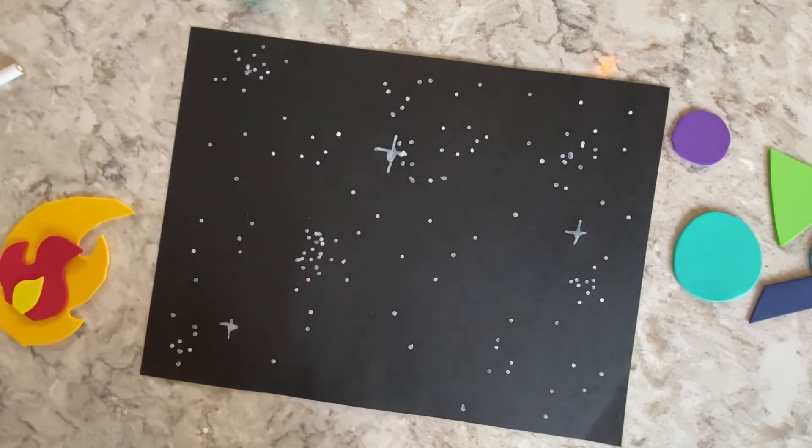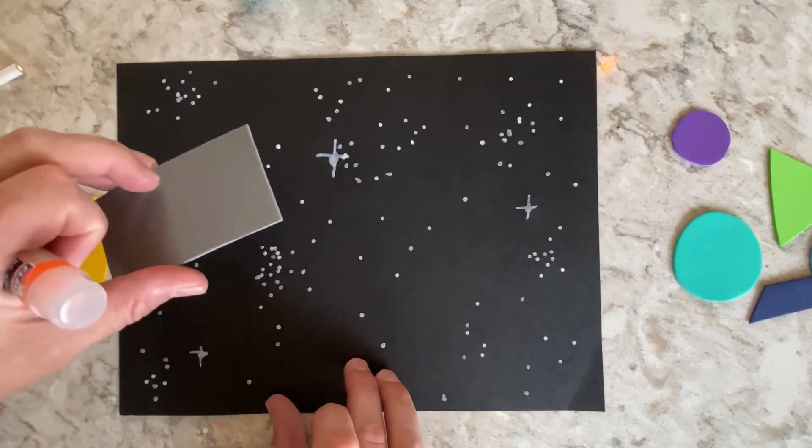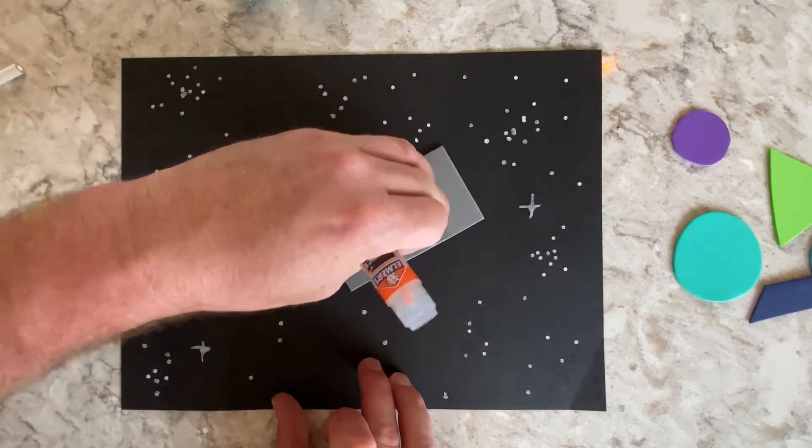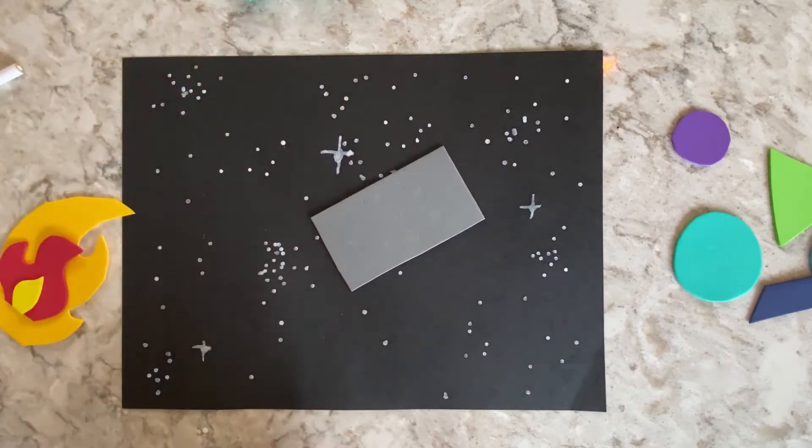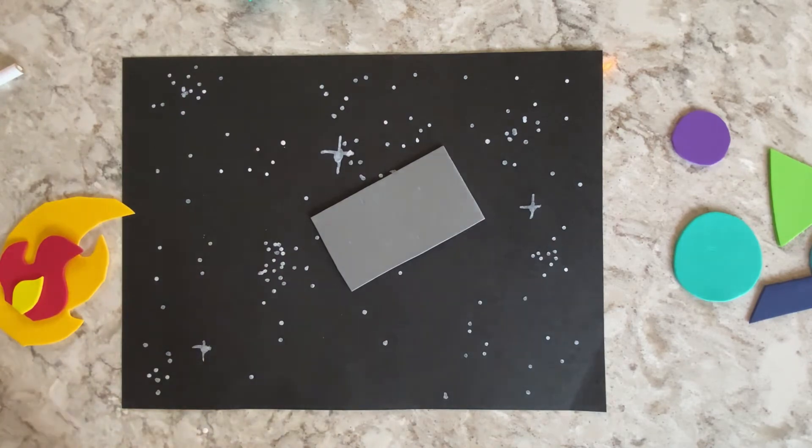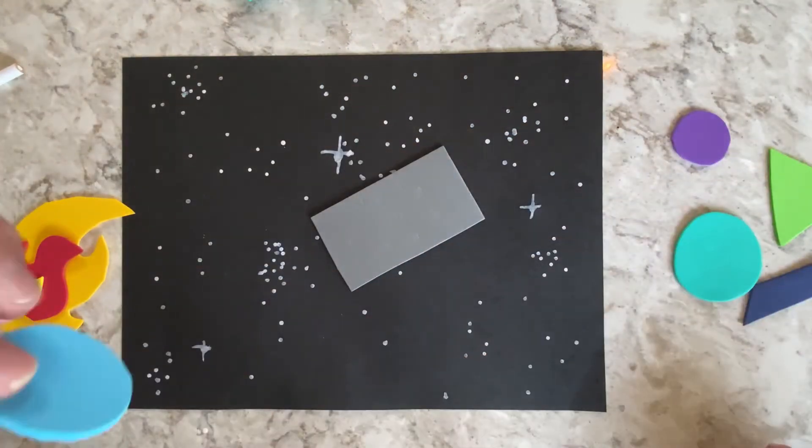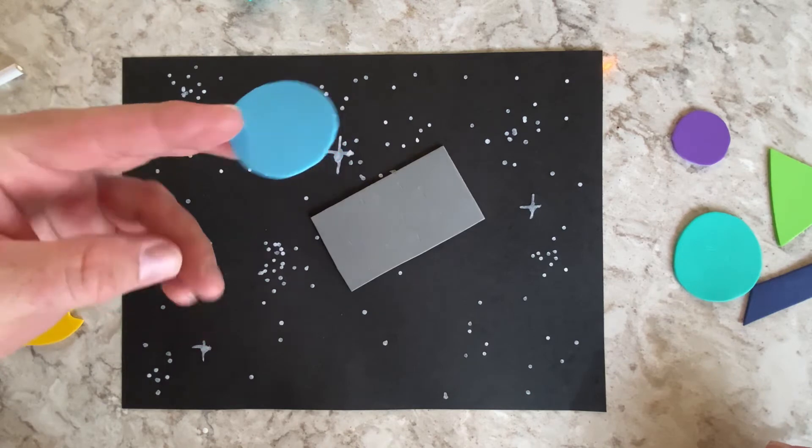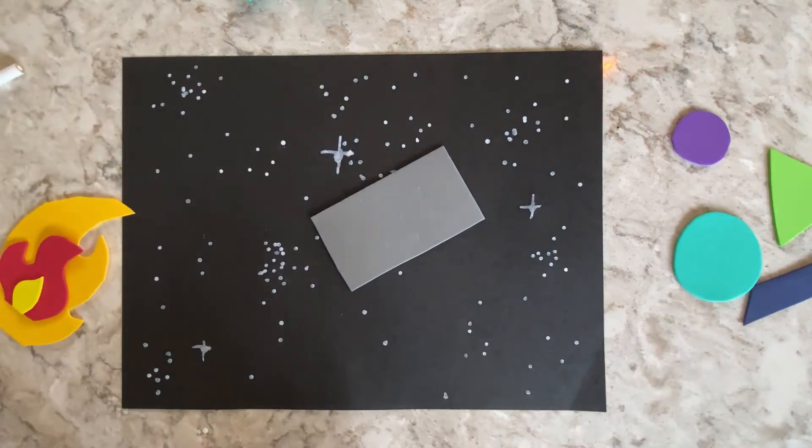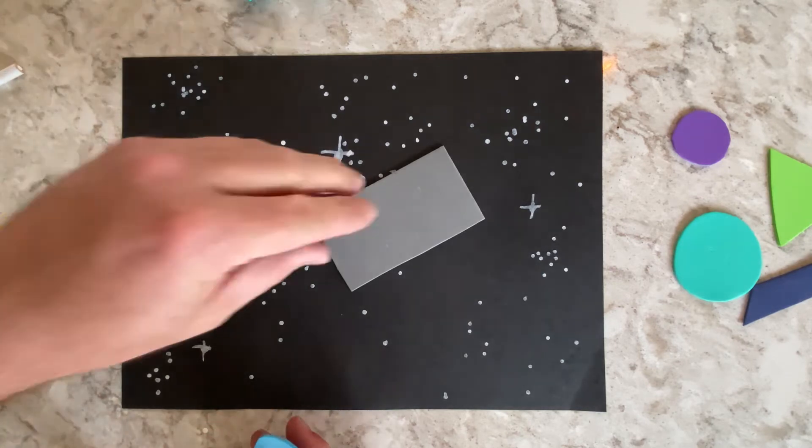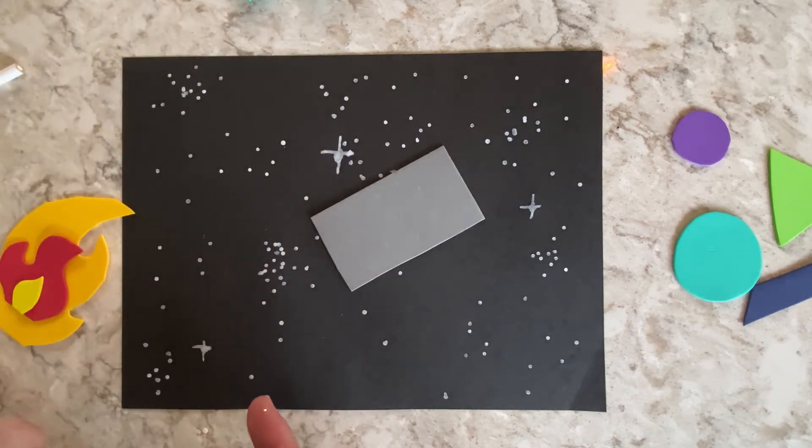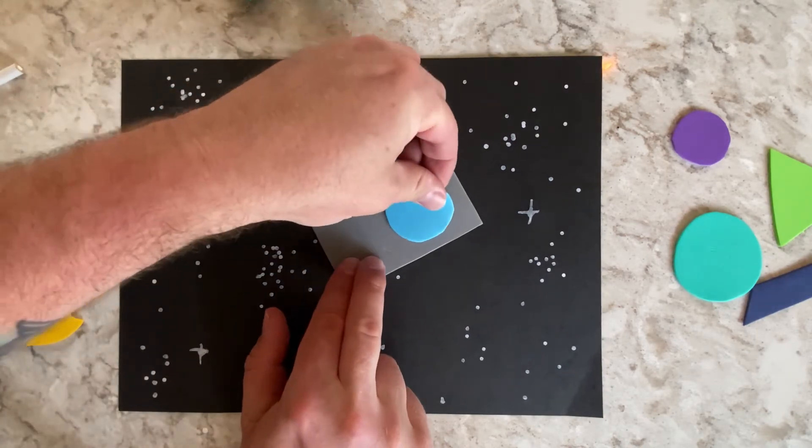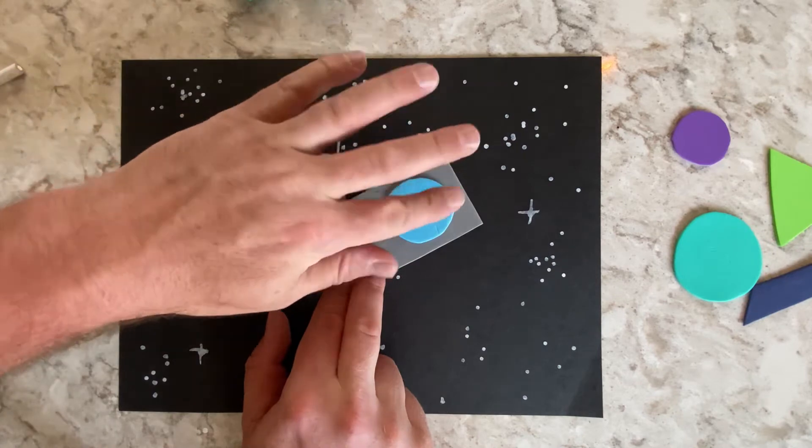And we're going to flip that over and add it to our outer space scene. Now, I've got this right here, this little blue circle that I cut out. Obviously, you're going to have to cut out your own shapes, and you can make it as crazy as you want. It doesn't have to be like I do it. You could add wings, and you could add all sorts of details. This is the window where the astronaut is going to look out of.